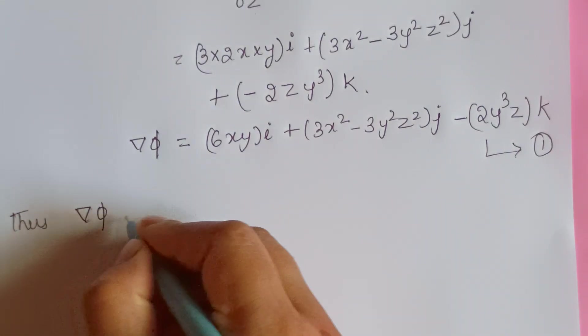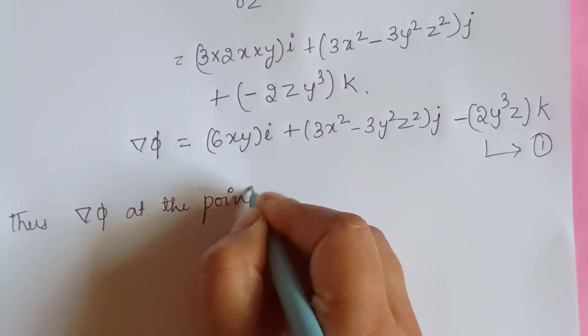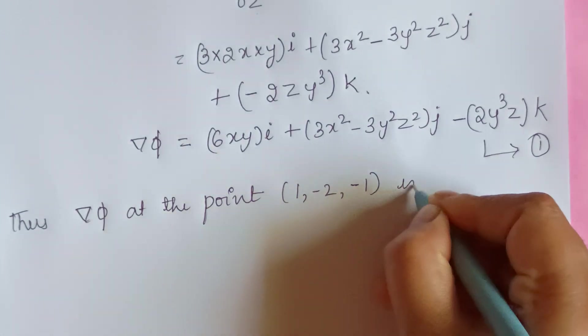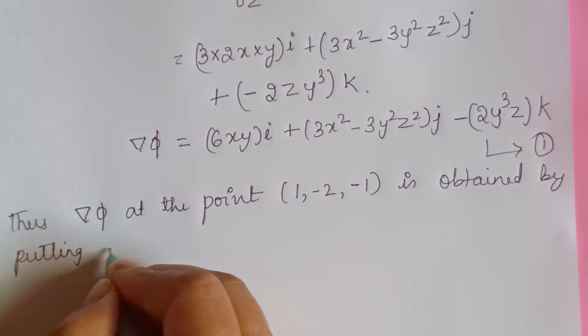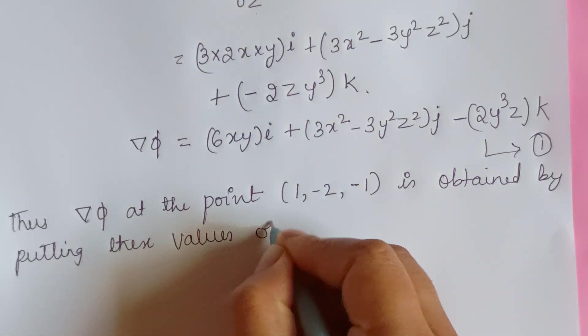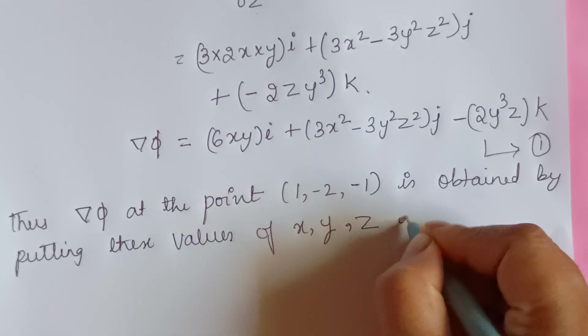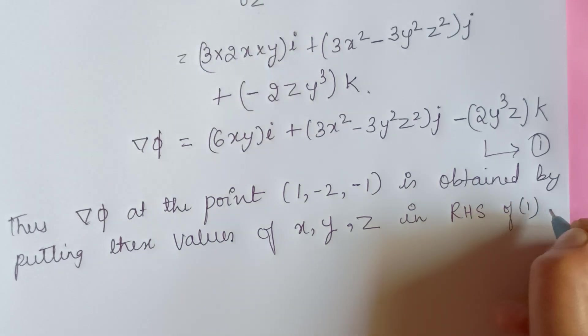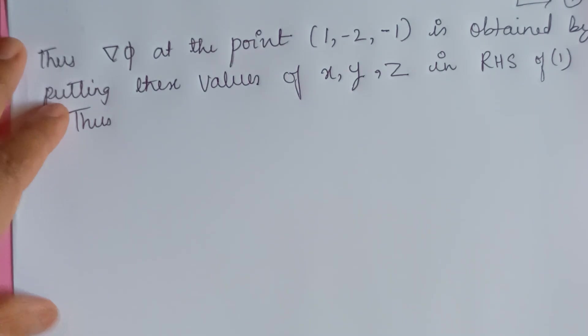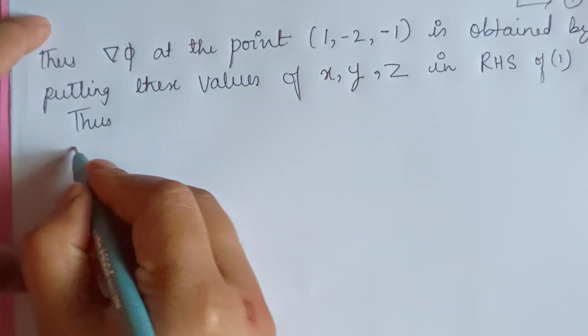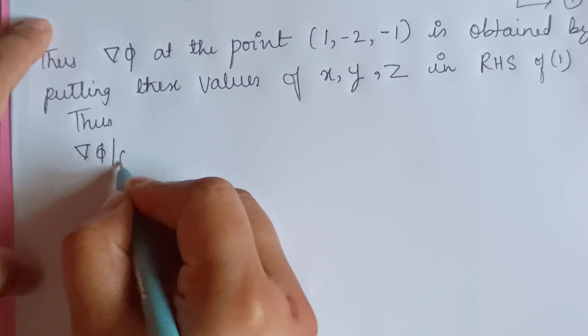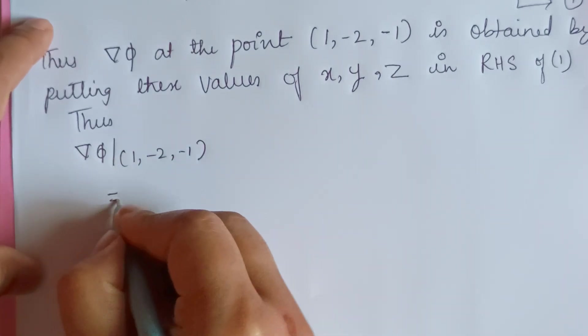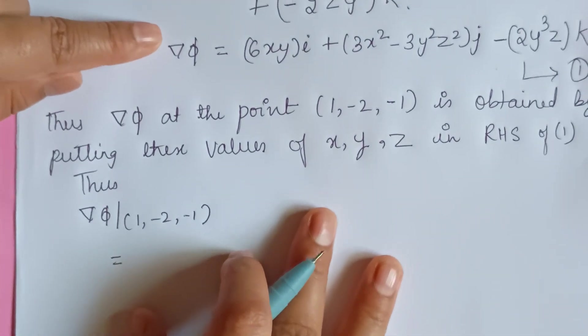Thus del phi at the point, we have the point given in the question, at the point (1, -2, -1) is obtained by putting these values of x, y, z in RHS of equation 1. I'll just put it in the RHS of this 1. So here's equation 1, so that when I substitute it becomes easy for you to understand.